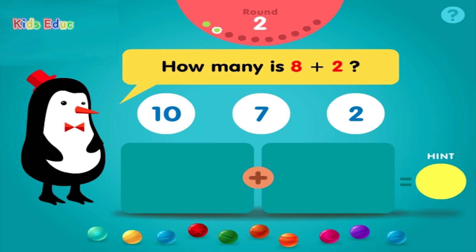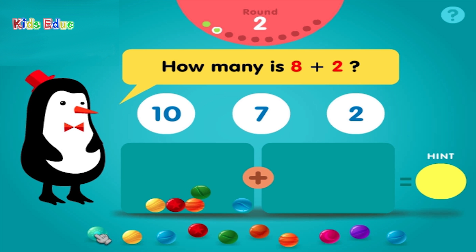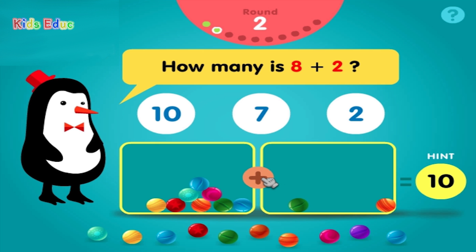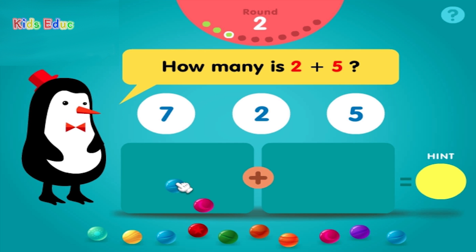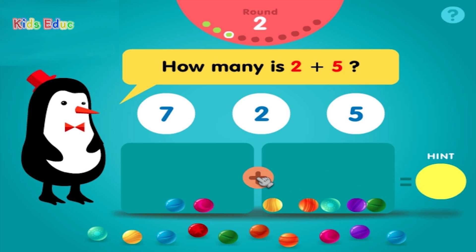How many is 8 plus 2? 1, 2, 3, 4, 5, 6, 7, 8, plus 1, 2, equals... Groovy!